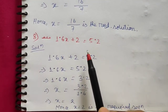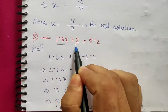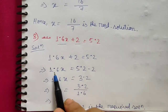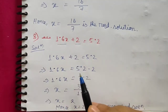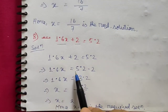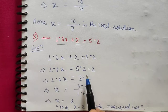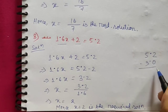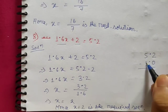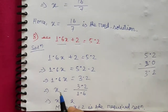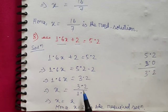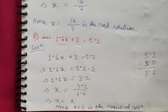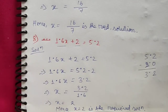Question 8: 1.6x plus 2 equals 5.2. Transposing the constant, 1.6x equals 5.2 minus 2, which is 3.2. Dividing both sides by 1.6 gives x equals 3.2 divided by 1.6, which equals 2. Hence x equals 2 is the required solution. This completes Exercise 8.1; one or two remaining questions you can solve easily on your own.